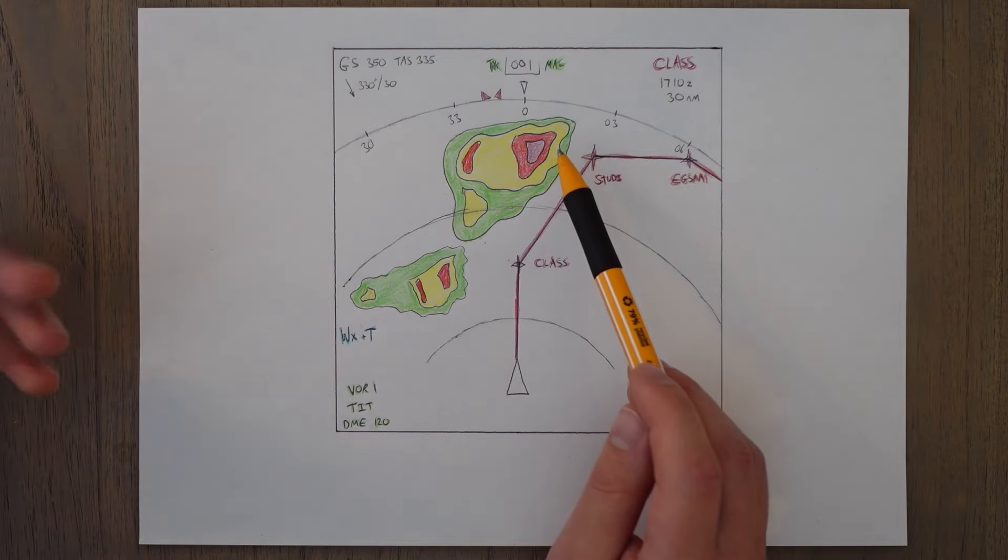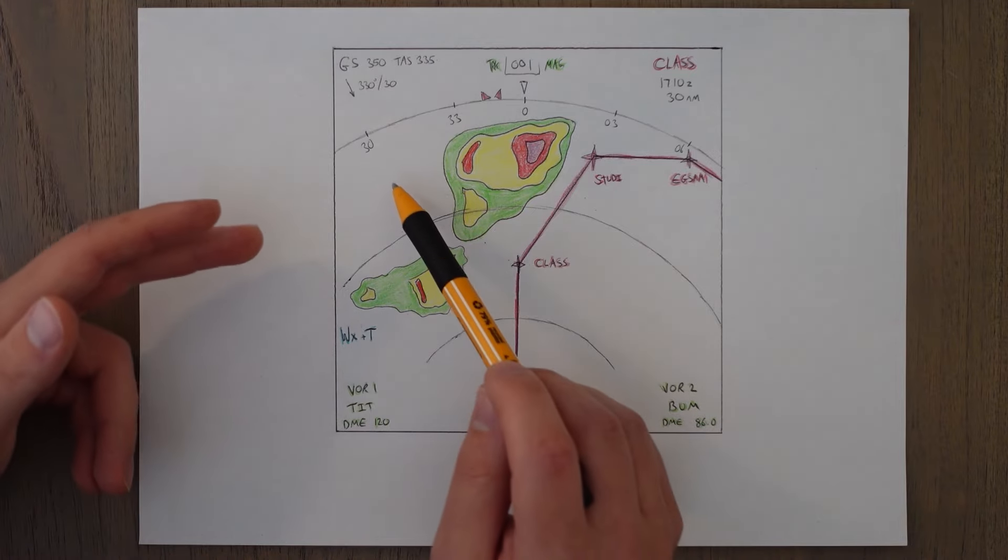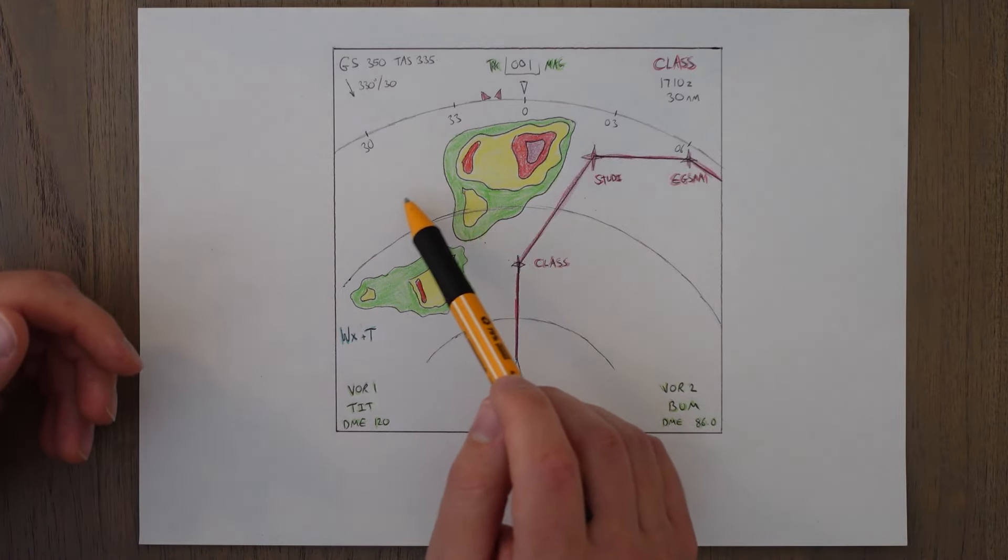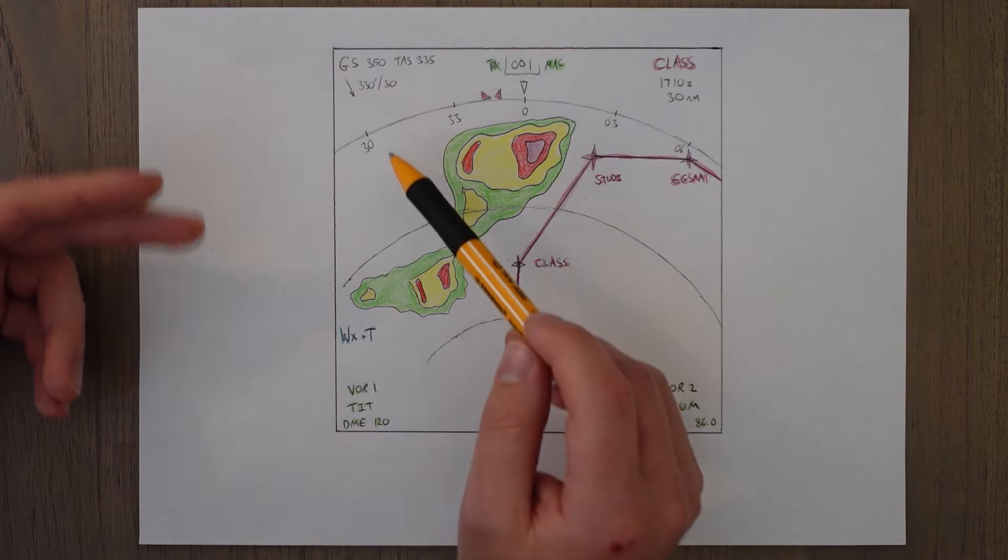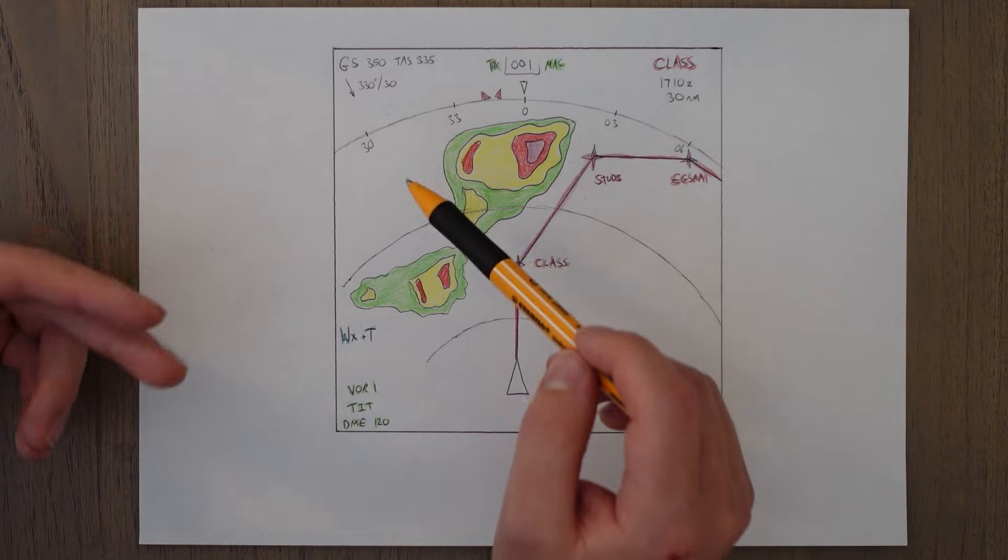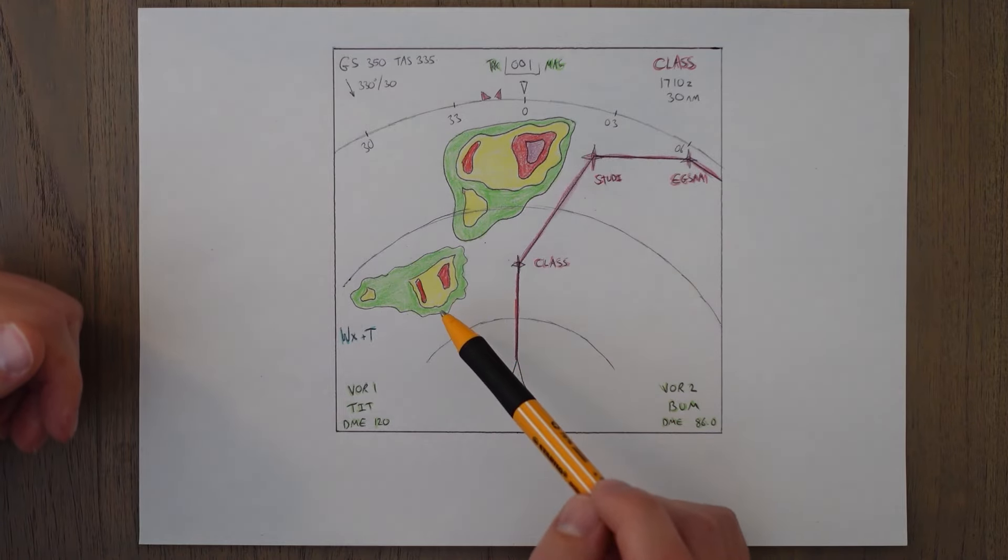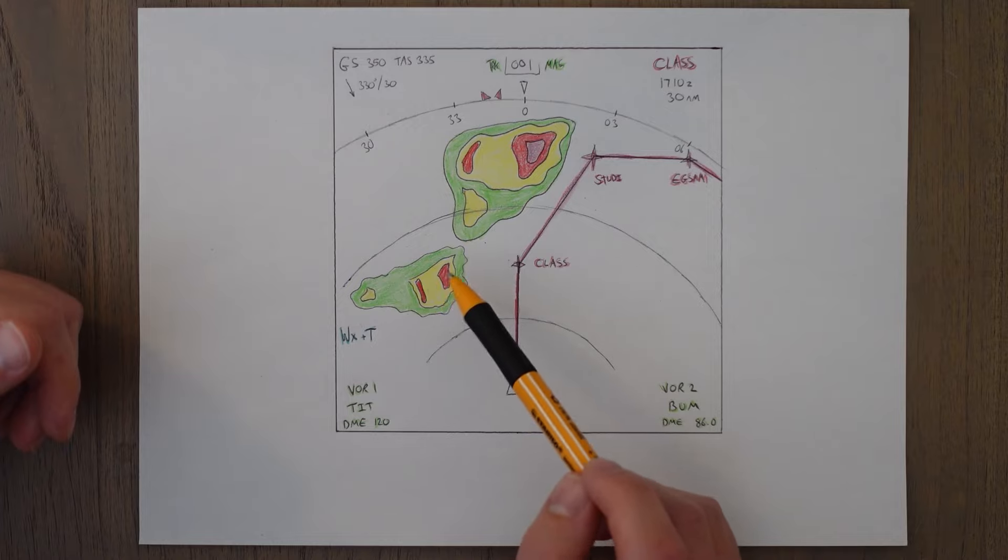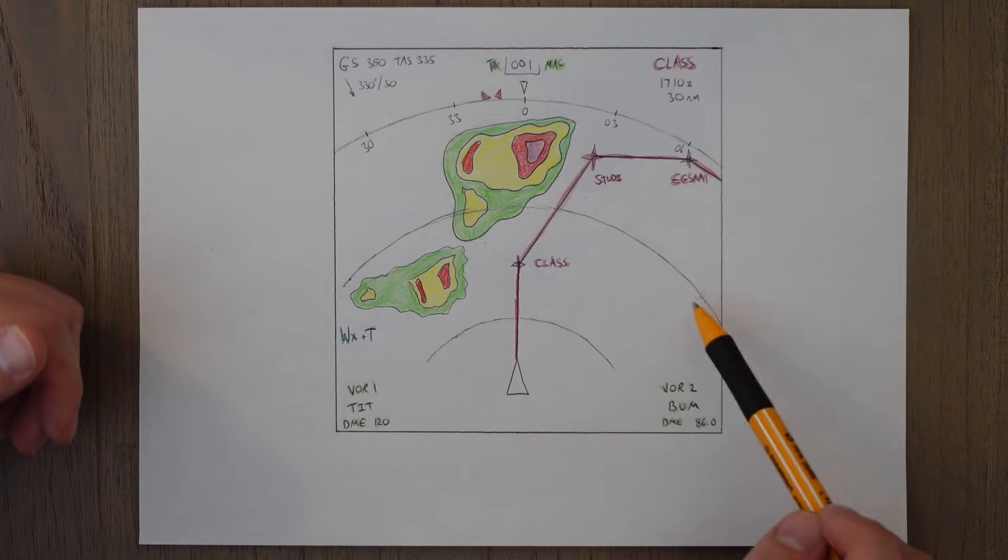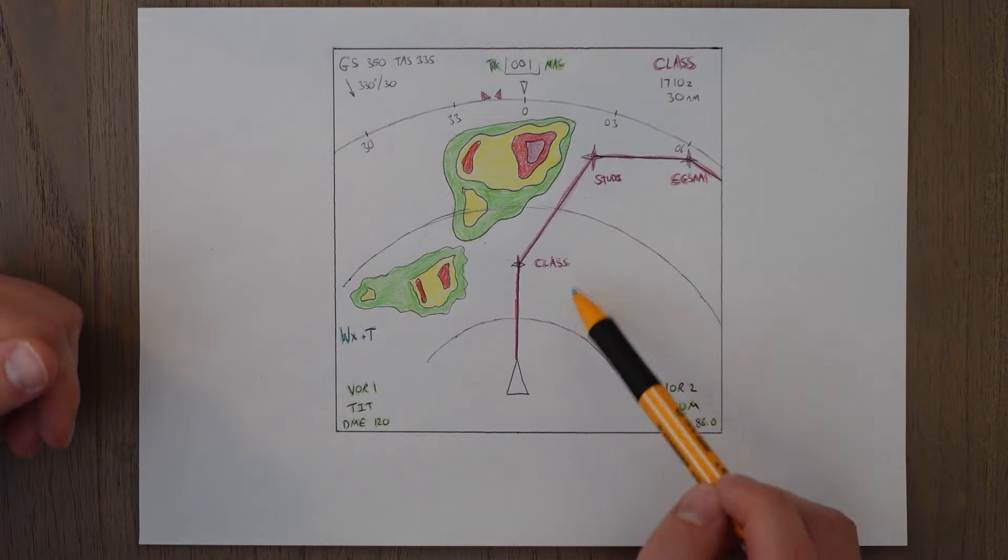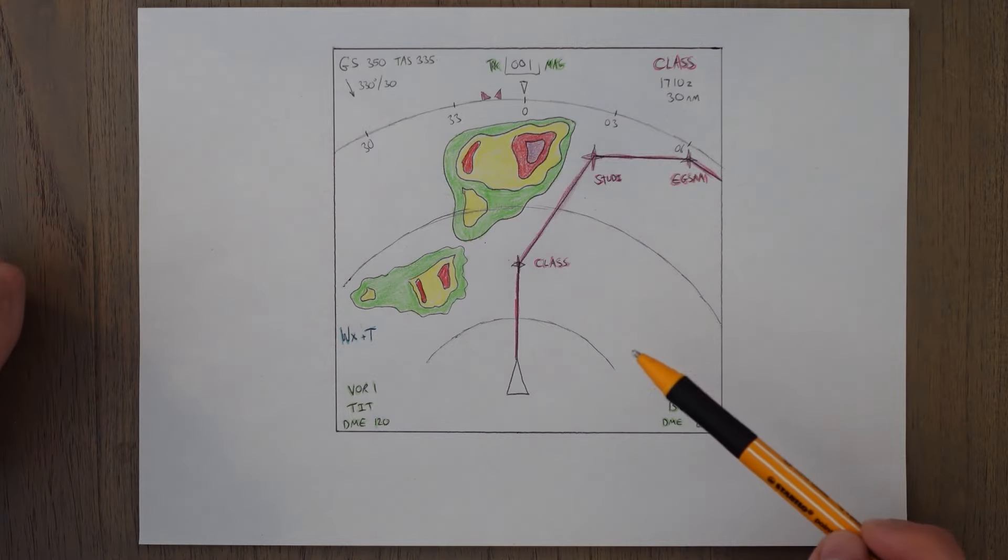We need to be aware of something else called radar shadowing as well. This is when one storm area of precipitation blocks another one behind it because it is so reflective that the storm casts a shadow behind it where we can't detect anything else. So in this example here there could well be a storm hidden but because we're getting all of our returns reflected off of this initial storm we don't actually know. But this area over here there's nothing blocking it so we can be fairly sure that our route through is going to be clear of the weather.